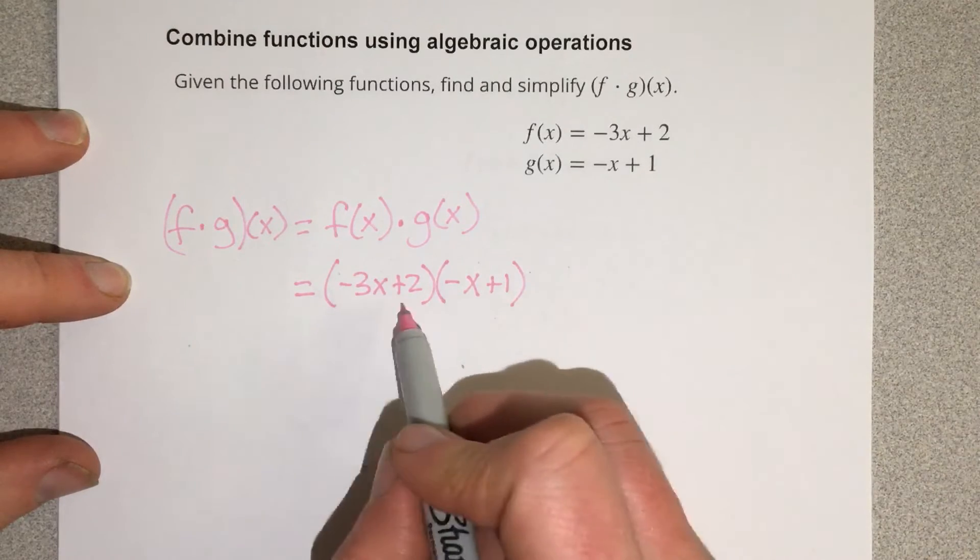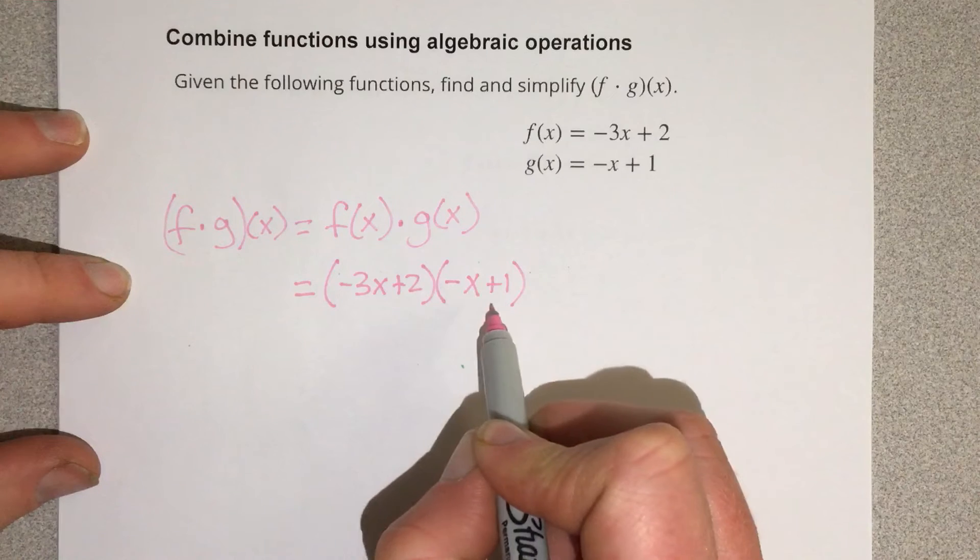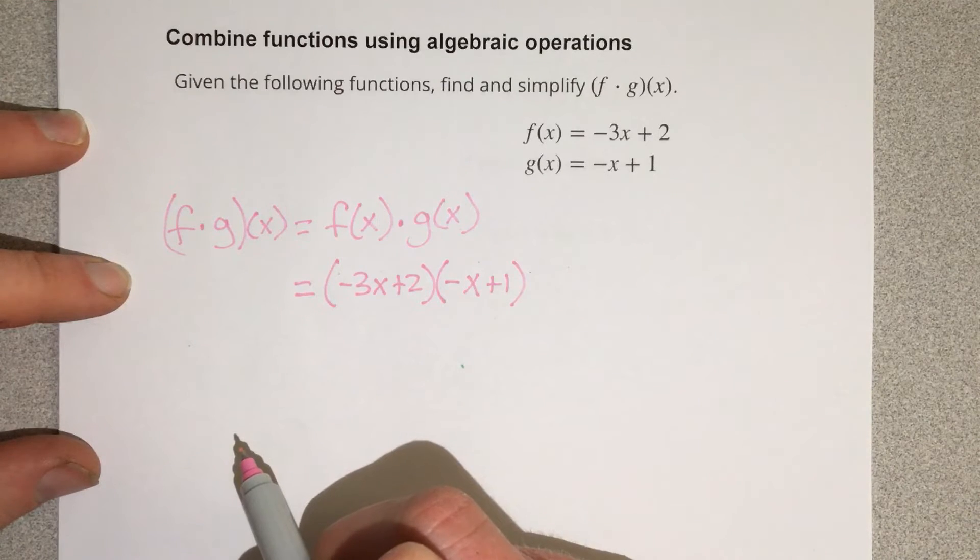Now I have two terms here in the first piece being multiplied by two terms here, which means we have four multiplications.